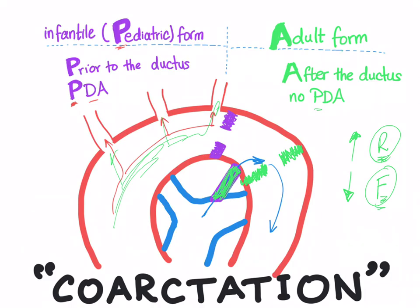Also with the adult form, anastomoses will occur around the intercostal vessels, leading to rib notches which are prominent on X-ray — the ribs will be notched. Keep in mind the adult form is also associated with a bicuspid aortic valve. Normally the aortic valve has three cusps, but in the adult form it may only have two cusps — called a bicuspid aortic valve.